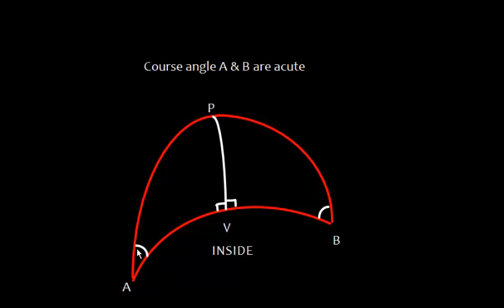This is course angle A and this is course angle B. The course can be from different directions, but we are interested in course angle. So if course angle A and B are acute, the vertex will lie inside. Acute means less than 90 degrees.